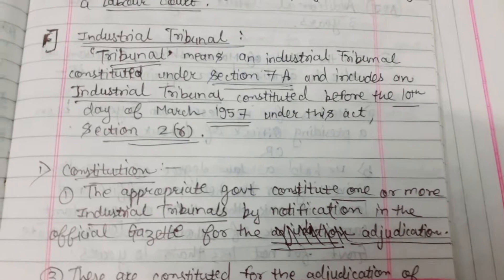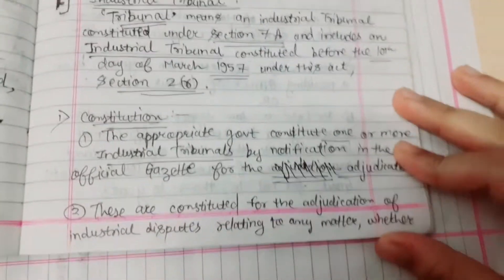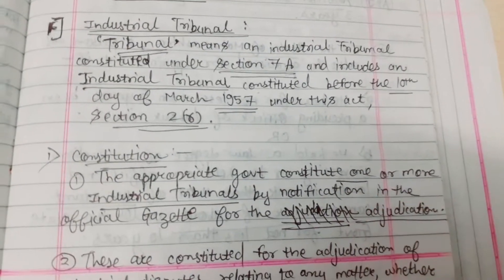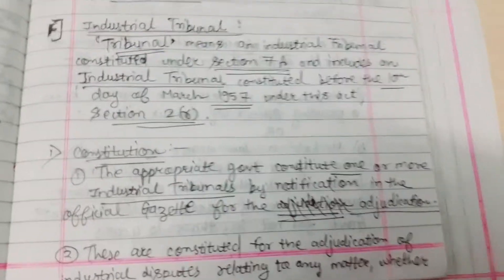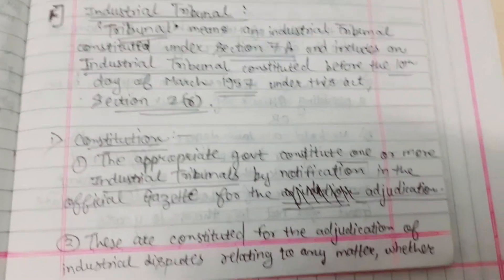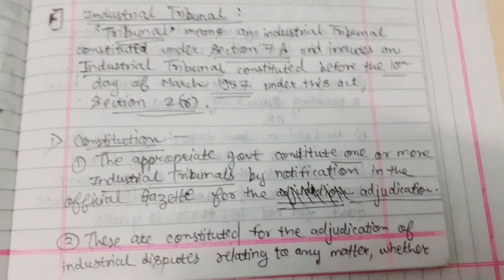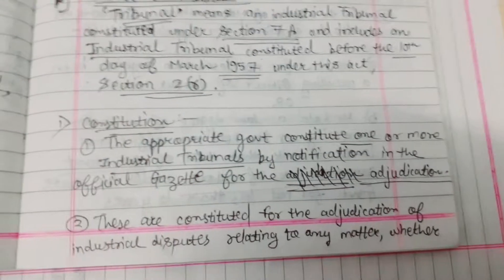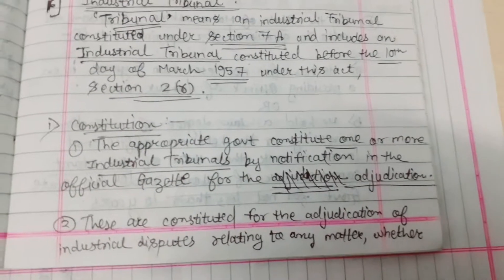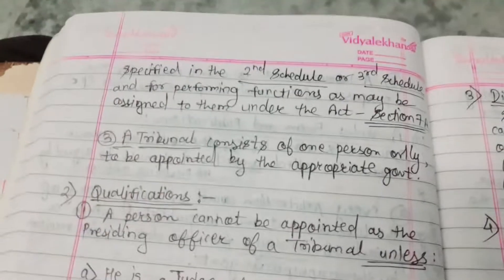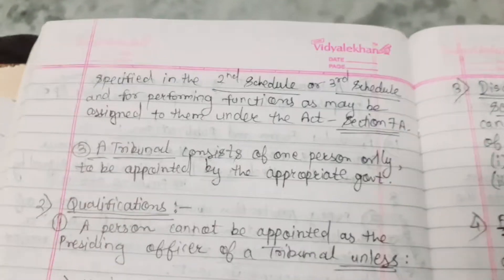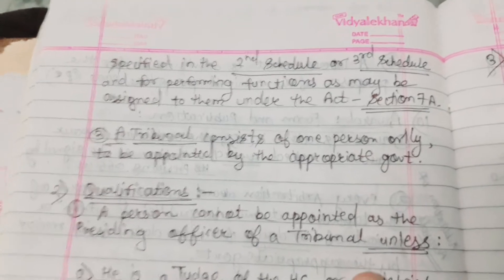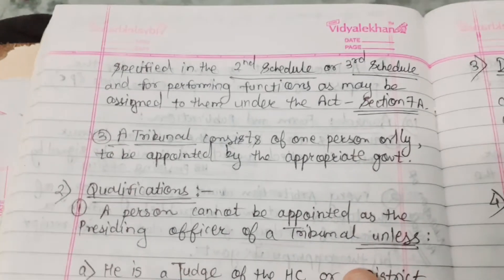Section 2 Clause R — Constitution: The appropriate government constitutes one or more industrial tribunals by notification in the official gazette for adjudication of industrial disputes relating to any matter whether specified in the 2nd schedule or 3rd schedule, and for performing such functions as may be assigned to them under the Act.